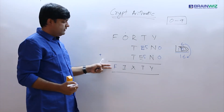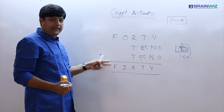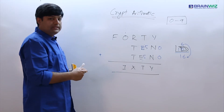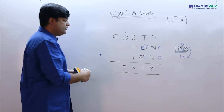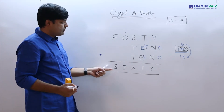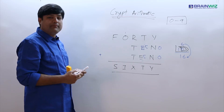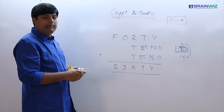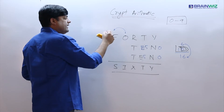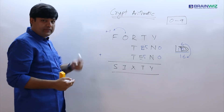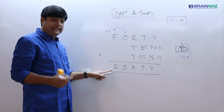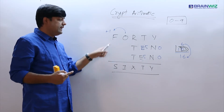When F appears without a carry there is no change, but here F has changed to S. When F has changed to S we can understand that somebody is producing a carry here — that is, we are getting a carry of 1. This means the relationship between F and S is that S is 1 more than F.